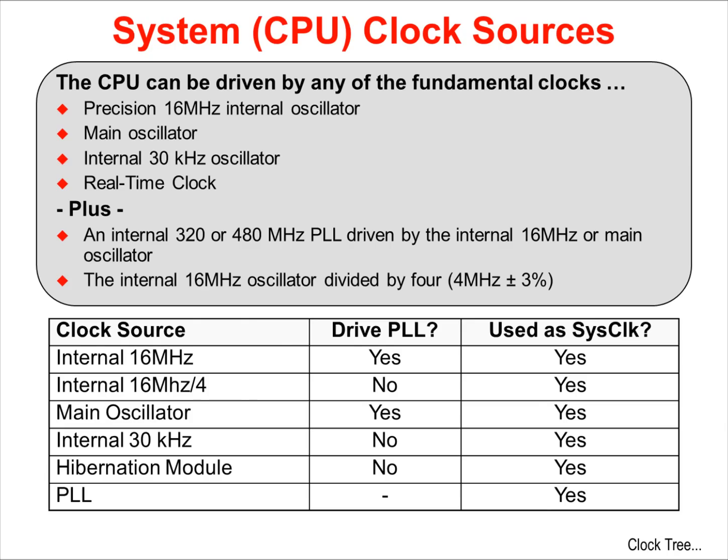The system clock, or CPU clock, can be driven by any of the fundamental clocks: the internal 16 MHz main oscillator, the internal 30 kHz oscillator, and the external real-time oscillator.